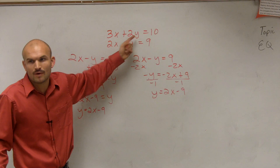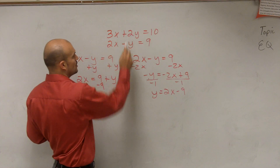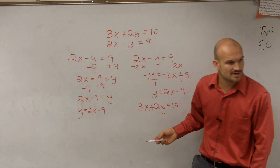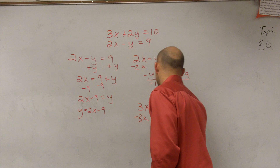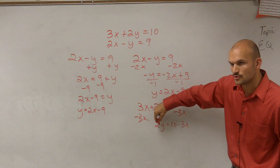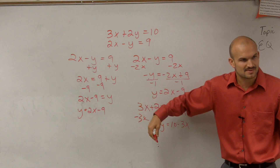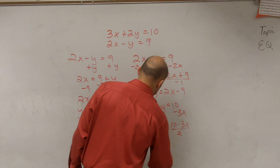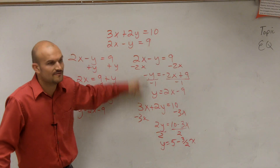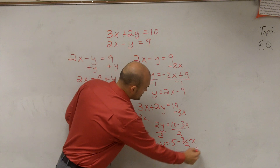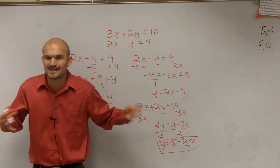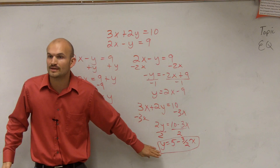Here's the reason why you want the coefficient of 1 or negative 1. Let's try solving for the y in 3x plus 2y equals 10 instead. You'd subtract 3x to get 2y equals 10 minus 3x, then divide by 2. You can see there are extra steps and you end up with fractions. This equation is much more mathematically difficult, and fractions can cause a lot of mistakes — so why deal with that when you don't have to?